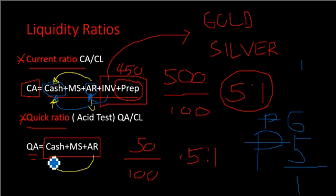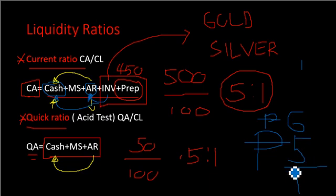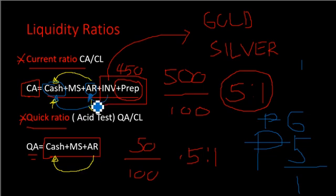Going back to the quick ratio: what happens if inventories are sold below cost? For example, an inventory costing five pesos is sold for two pesos — a loss of three pesos. Inventories go down by five pesos, but cash or accounts receivable increases by only two pesos, so your current ratio will go down when inventory is sold at a loss.